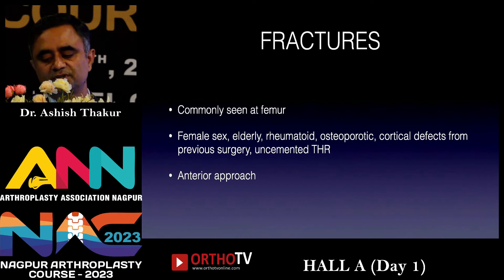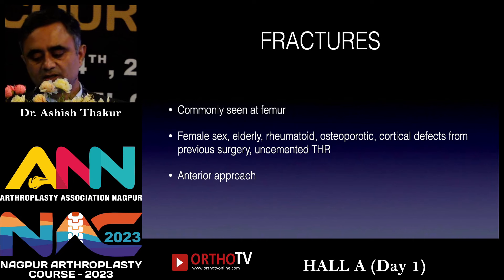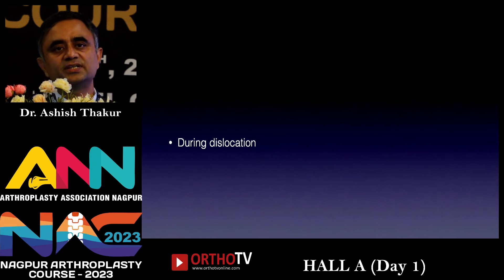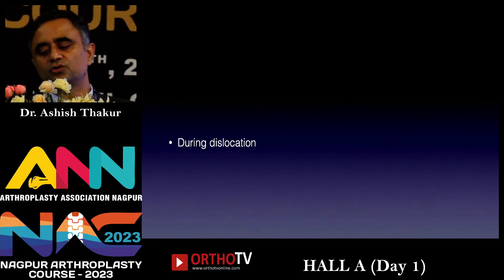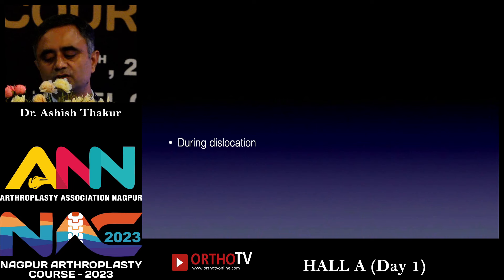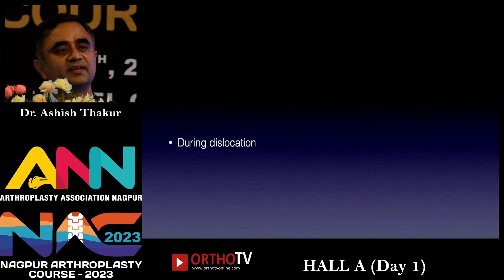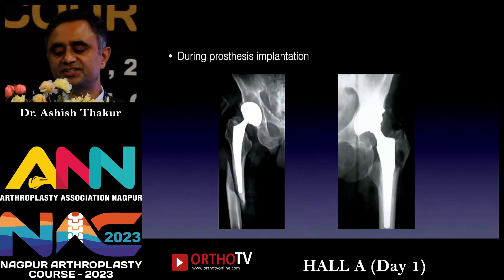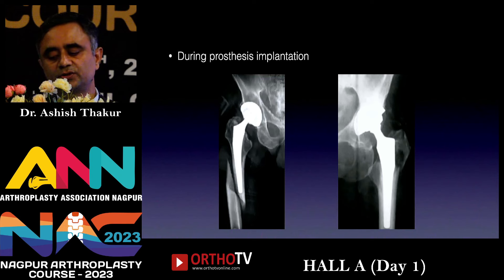Fracture is another dreadful complication, mostly seen in the femur. It is more common in elderly, rheumatoid, or osteoporotic patients and those with cortical defects from previous surgeries. It is commonly associated with uncemented hips and direct anterior approaches. Fractures are mostly seen during the dislocation process and can be avoided by not using excessive force during dislocation, performing more capsulotomy and soft tissue release, and removing osteophytes along the margin of the acetabulum. In patients with intrapelvic protrusion of the acetabulum, the neck can be divided and the head removed in a piecemeal fashion. The second largest incidence of fracture occurs during broaching and prosthesis implantation, especially with cementless stems — avoided by using flexible reamers and intraoperative fluoroscopy to safely open the canal in patients with tight distal canals.